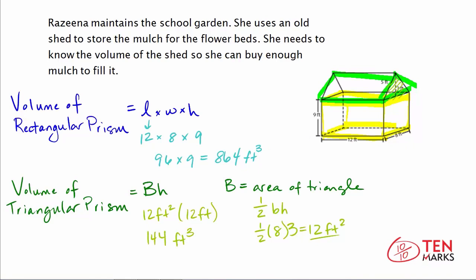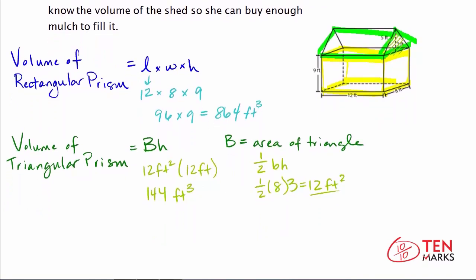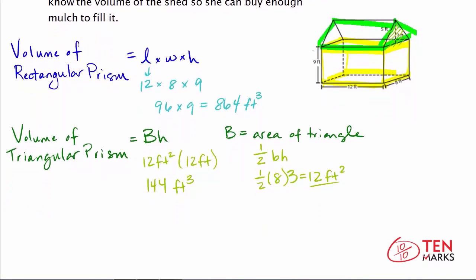To find the total volume of the shed, we add the volume of the triangular prism plus the volume of the rectangular prism: 864 feet cubed plus 144 feet cubed. The grand total is 1,008 feet cubed. This is the number of cubic feet inside the shed, which Rosina can use to determine how many bags of mulch she needs to buy.